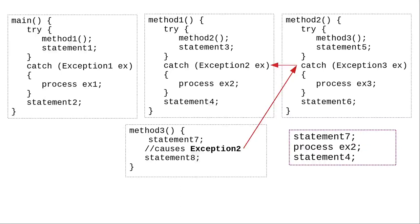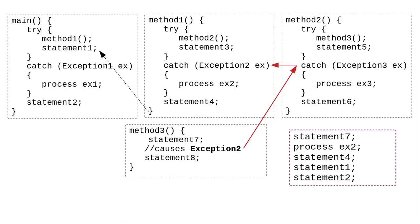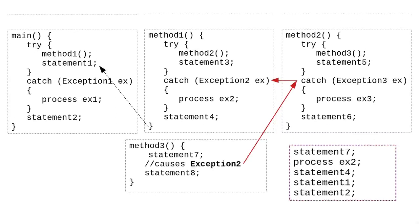Method 1 can catch exception 2. It does that, processes it, and executes statement 4. Control returns to main, which does statement 1 and statement 2.